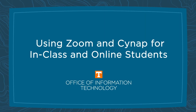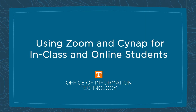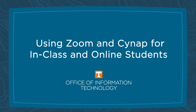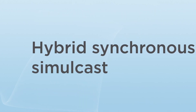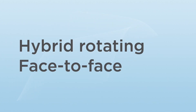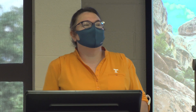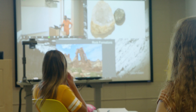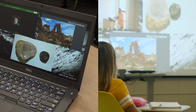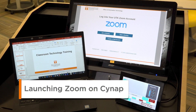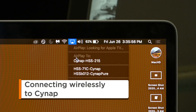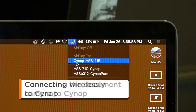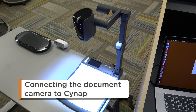This video covers connecting to Zoom and the Classroom Projector using SynApp for instruction to in-classroom and online students using the Hybrid Synchronous Simulcast Teaching Model or the Hybrid Rotating Face-to-Face Model. We'll cover several methods for displaying content with the SynApp presentation system to both in-classroom and online students, including launching Zoom on SynApp, connecting wirelessly to SynApp with your laptop, and connecting the document camera to SynApp.